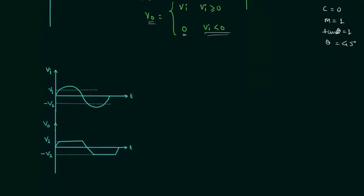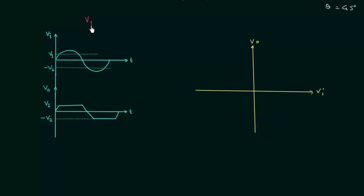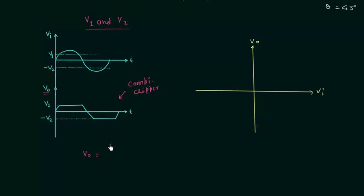Now we will move to the second problem, which is a little more complicated. The input waveform is sinusoidal. V1 and V2 are the two biasing potentials. In the output waveform you can see both positive and negative portions of the waveform are clipped, so this waveform is the waveform of a combination clipper. Now I will calculate the value of output voltage using the output waveform.